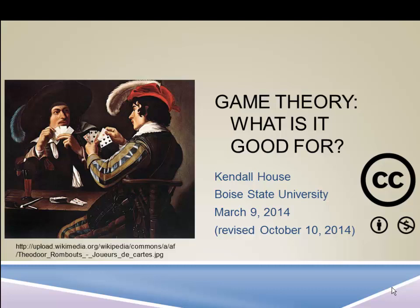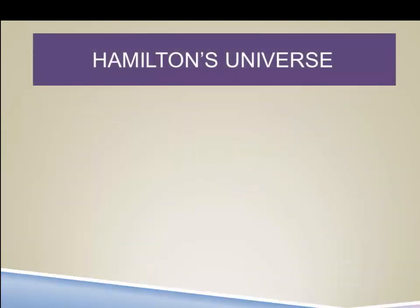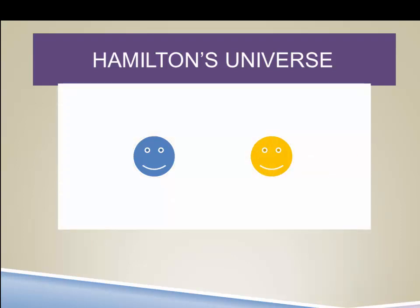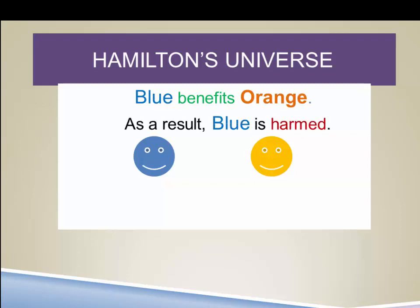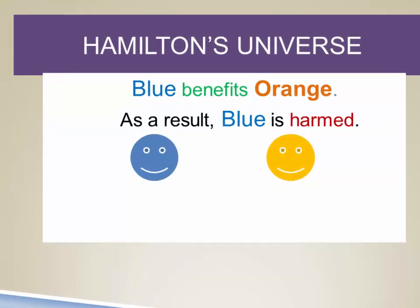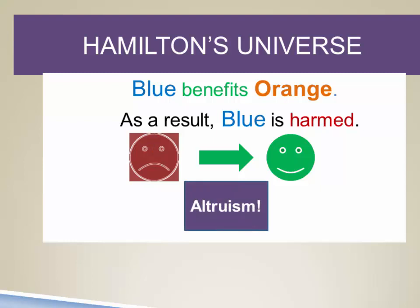This presentation is called Game Theory: What is it good for? So if we go back to Hamilton's universe and the examples that we used there, they were of this form. We have two individuals — one is blue and one is orange. Blue benefits orange, and as a result of this, blue is harmed. So we have the benefit flowing from blue to orange. Orange receives the benefit and blue receives the harm. And that is what we call altruism.